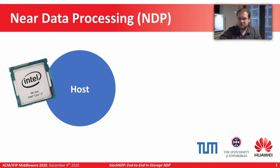Let's start with some context. Near Data Processing, NDP for short, is an approach of extending the traditional von Neumann computational model in which data manipulation is done primarily by the central computing unit. In NDP, active computations can be also performed by other parts of the computer system, eliminating the need for unnecessary data movement. The computation is performed near to data, hence the name.